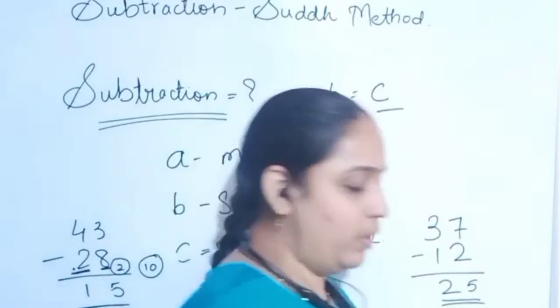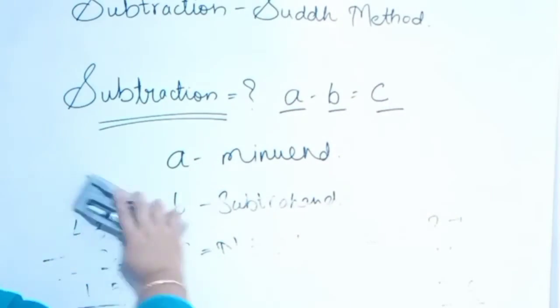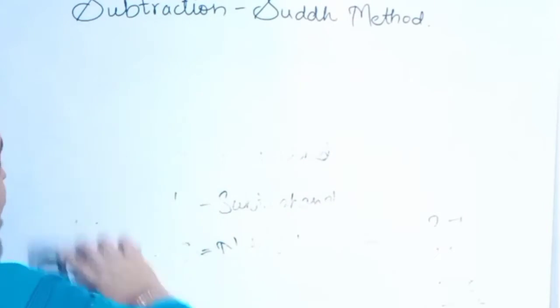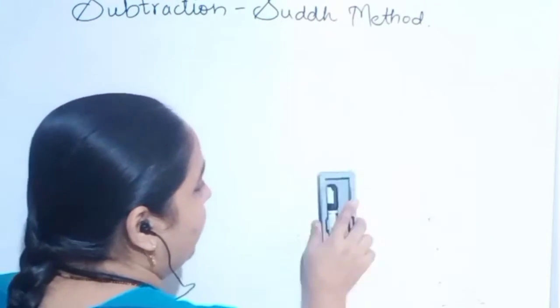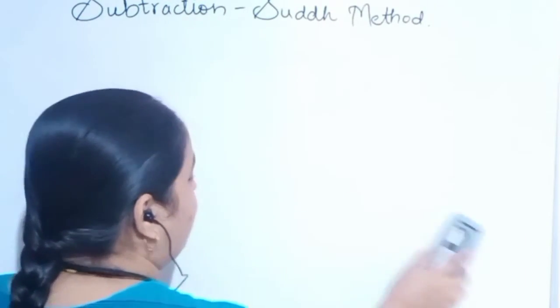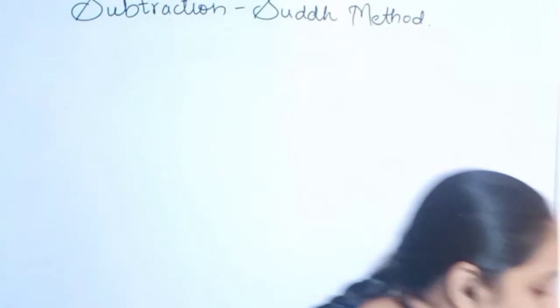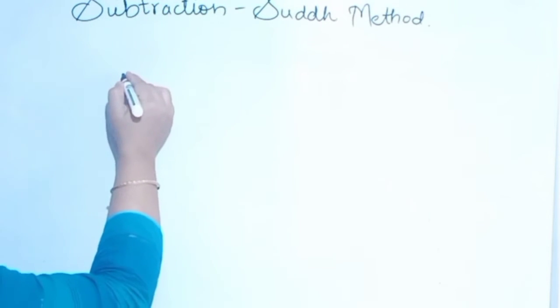We will solve one more problem. Suddh method is nothing but the easiest method to do calculations of any maths. It can be addition, subtraction, multiplication, division and so on. Addition we have already seen, subtraction we are doing. We will solve one more problem.